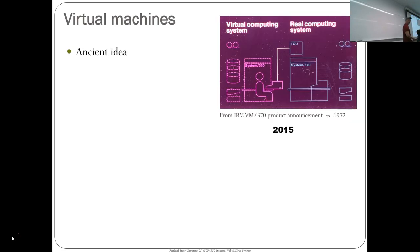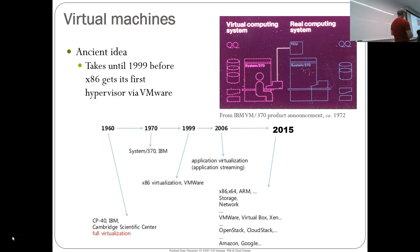Virtual machines are also an ancient idea from the 1960s — the CP40 system and IBM System 370 had virtual memory and virtual machine support in the 1970s. The x86 architecture didn't get it until 1999, so it took about 30 years for virtualization to come to x86. VMware brought hypervisors to the Windows platform at that point.